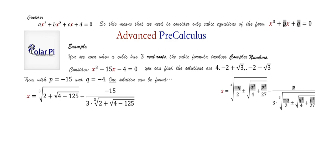Simplifying, √(-121) = 11i, so we need the cube root of (2 + 11i). Every complex number has three cube roots. The best way to find them is to use De Moivre's theorem, which works well for finding complex roots of any degree.